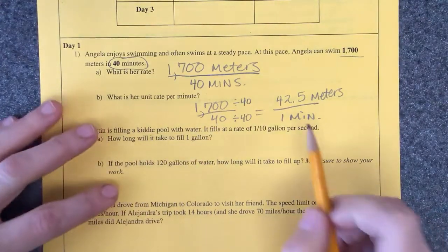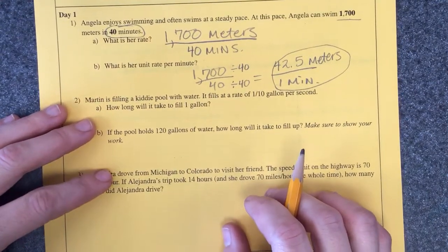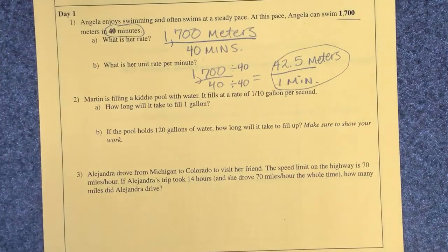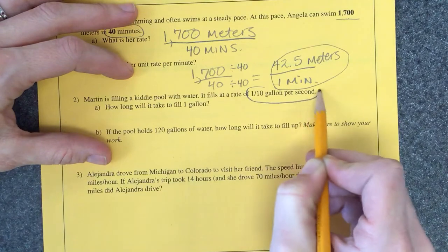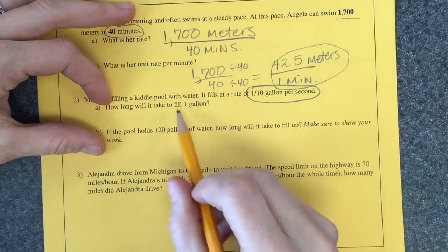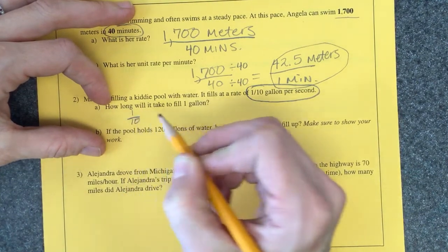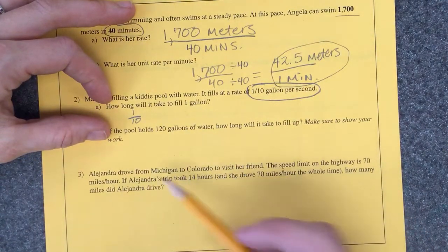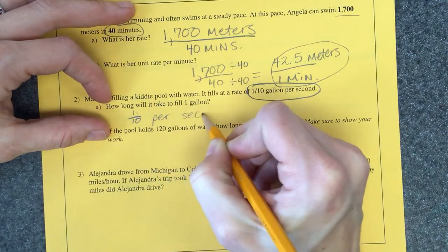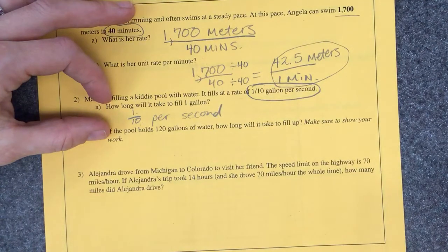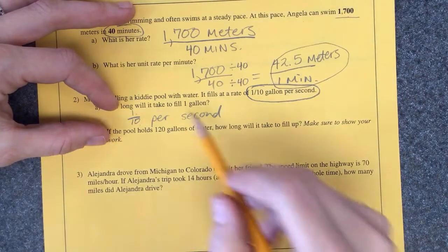All right, Martin is filling a kiddie pool with water. It fills at a rate of one-tenth of a gallon per second, that's pretty slow I think. How long will it take to fill one gallon? Well let's see, we want one gallon and this slow thing only does one-tenth per second. How many tenths does it take to make one whole?